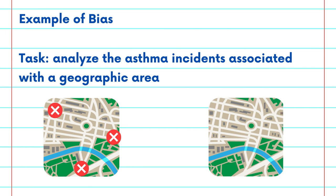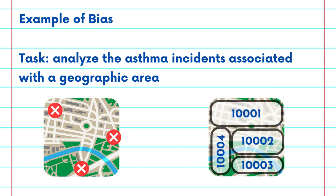In other cases, one may average the results and not identify the much higher health risk that becomes visible when the data is broken down by zip code, thereby ignoring the need for action to reduce air pollution and the resultant asthma risk in certain areas. As you can see, it is important that the data scientist does not ignore or discount any geographic area's data. Using all appropriate data will ensure a clearer understanding and should result in more complete and equitable conclusions and decisions.